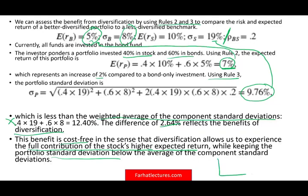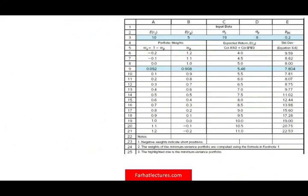Remember the fundamental tradeoff: the more risk you take, the more expected return you get. But the beauty of diversification is that rather than a strictly linear relationship, you can take less risk and have the return go up more quickly. You want less risk but higher return — that's what diversification achieves.